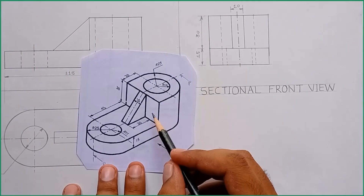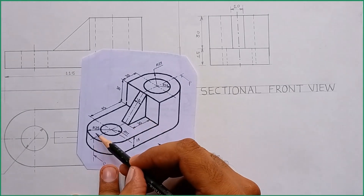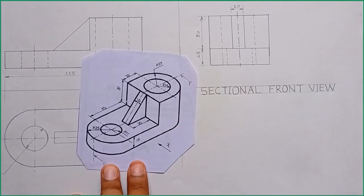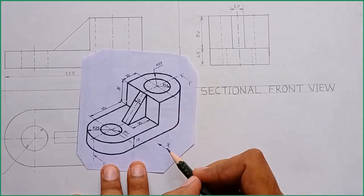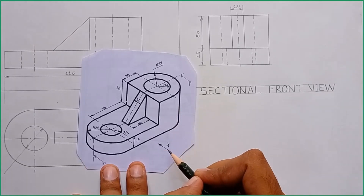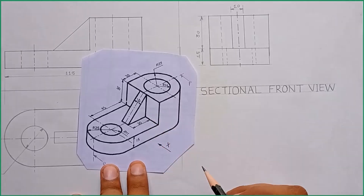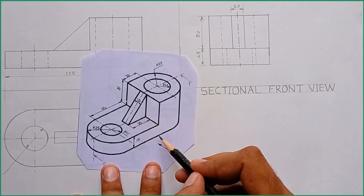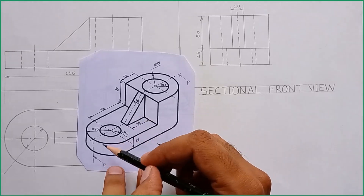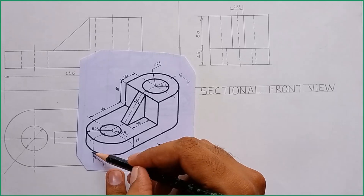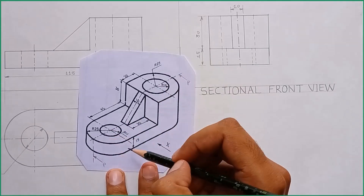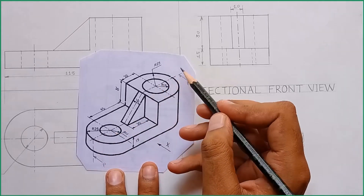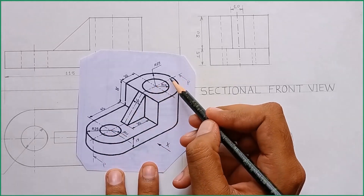Let's say this is my object. If we cut this object through this axis, what would be the outcome, or what would be the remaining part that is visible while viewing from this side? That is what we have to imagine and draw. So let's draw the sectional front view of this object. Here a section plane or cutting plane line is drawn, and we cut this object using a plane along this axis.